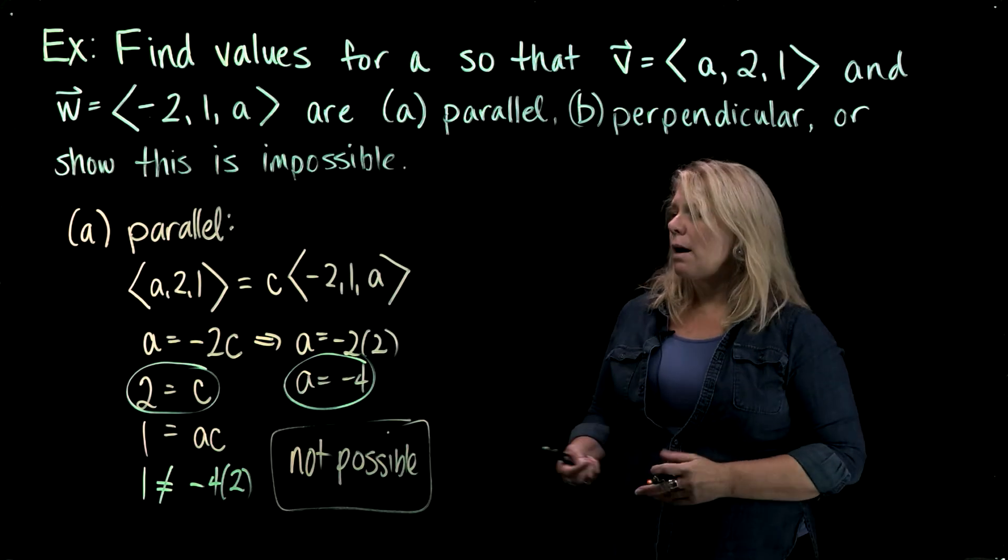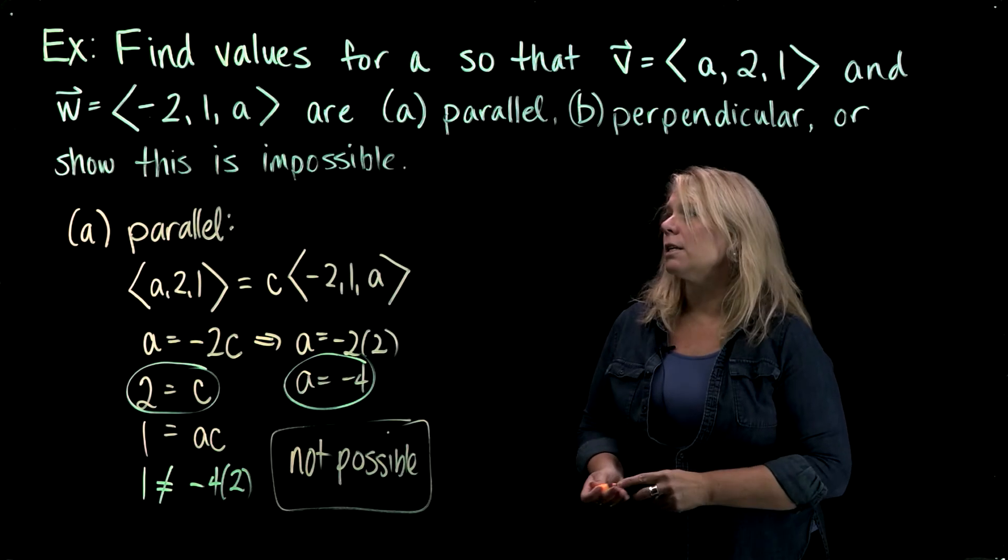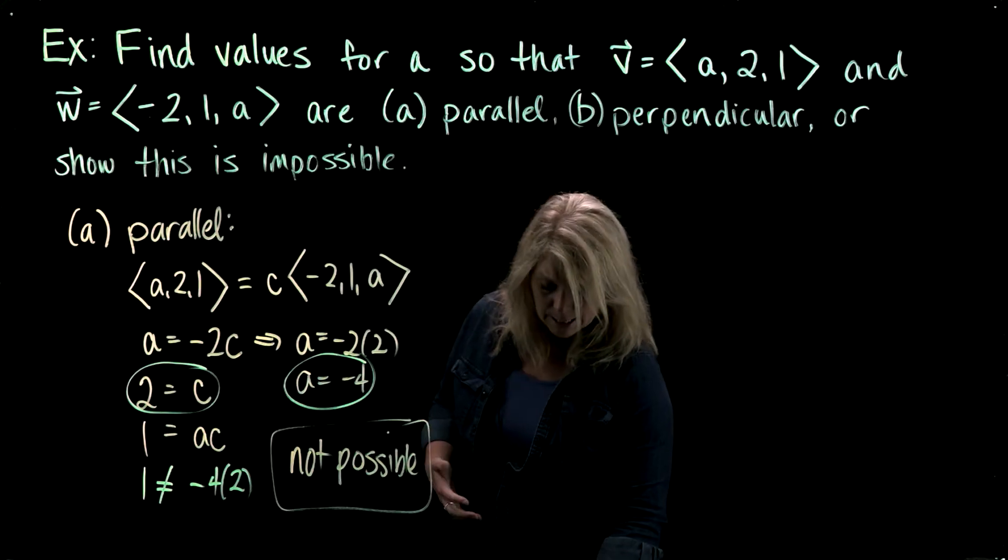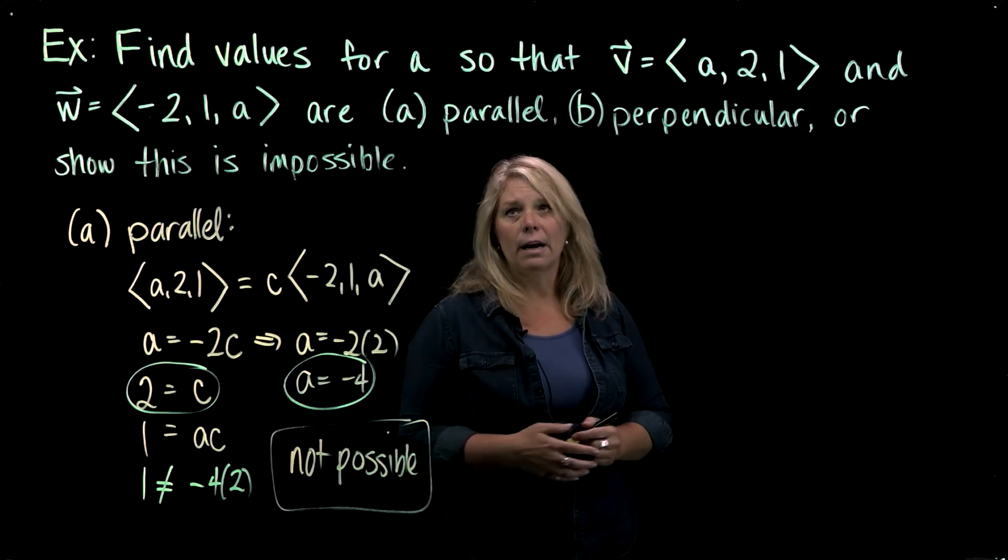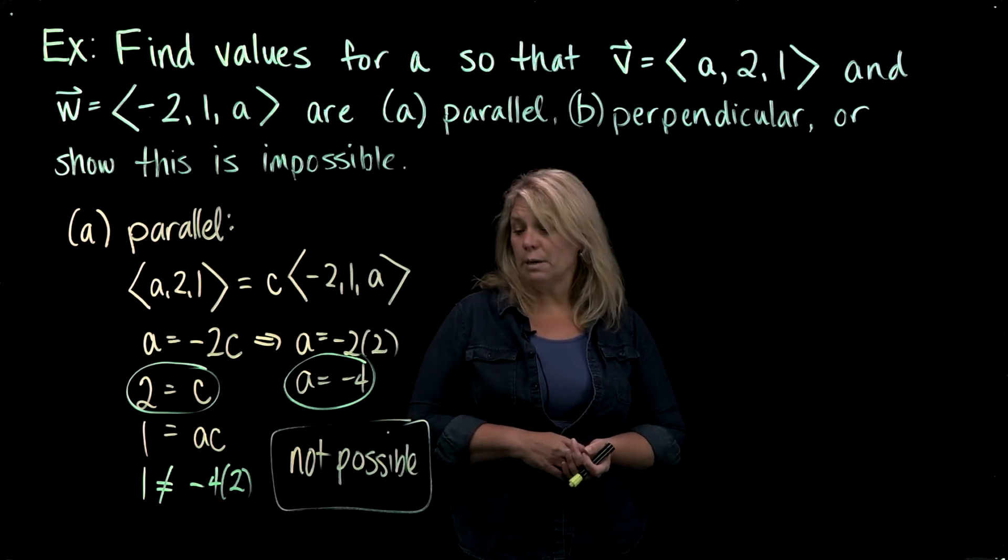Alright, let's go on to the second part of the problem here and think about if these two vectors were going to be perpendicular to each other, how I might think about finding a possible value or show that it's impossible that the two vectors are perpendicular to each other.